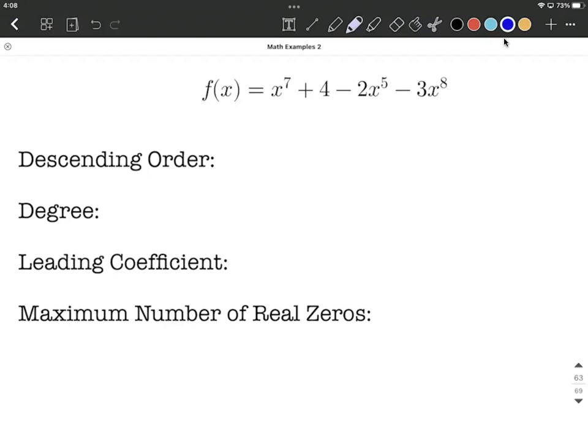What we're looking for is what exponent each one of these variables is raised to. So on the first term, we have x to the 7th power, so the degree there is going to be 7.